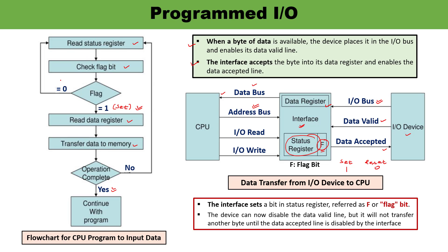If the flag bit is 0, it means it is reset — no data is available in the data register. The processor must read the status register again and continuously checks whether the flag bit is 1 or not — whether data is available in the data register or not. The CPU is continuously monitoring whether data is present. A lot of time is involved in just monitoring, meaning the CPU is kept idling for that duration, reducing CPU efficiency. This is the drawback of Programmed I/O, which is overcome in interrupt-initiated I/O, which I will discuss in the coming video.